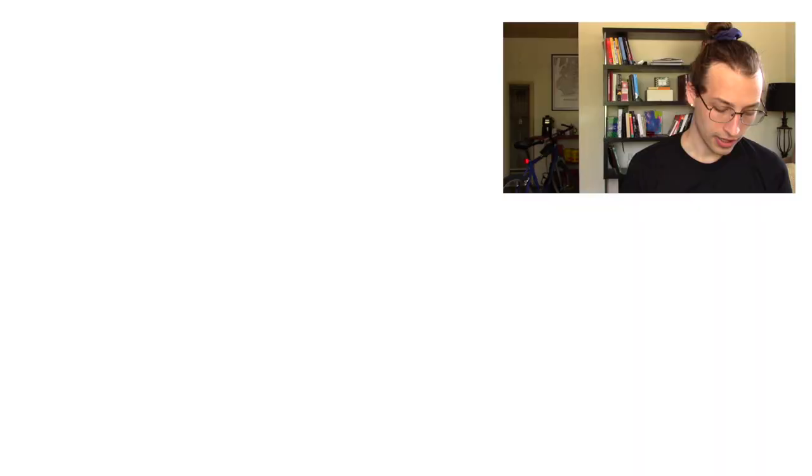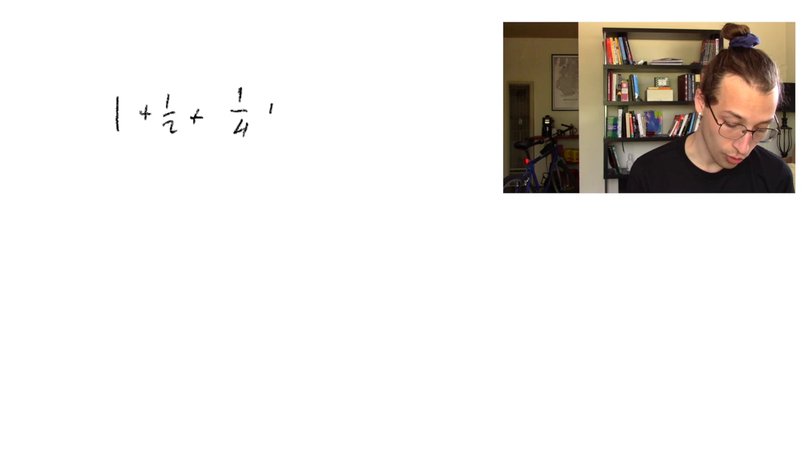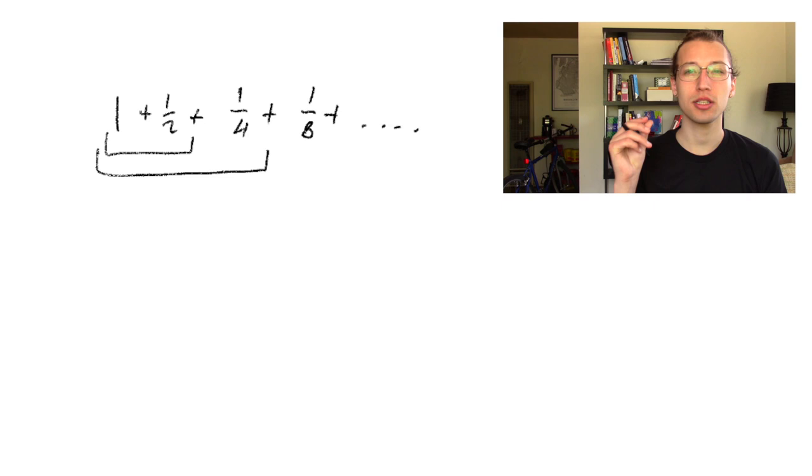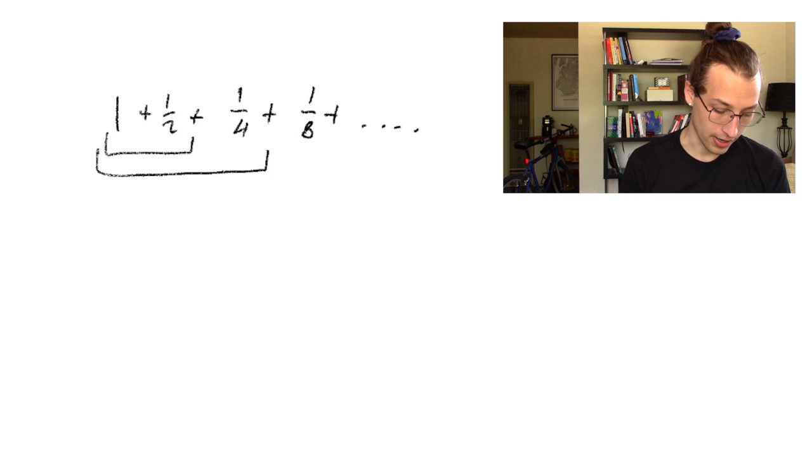Normally, if I'm adding 1 plus 1 half plus 1 quarter plus 1 eighth and so on, we usually say that the distance between each of these truncated sums and 2 is getting smaller and smaller in a way that converges. Let's make sure we know what that looks like. The first truncated sum of this infinite sum here is just 1, and the distance from 1 to 2 is just 1. This is using the absolute value metric.